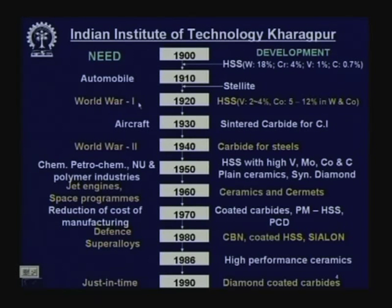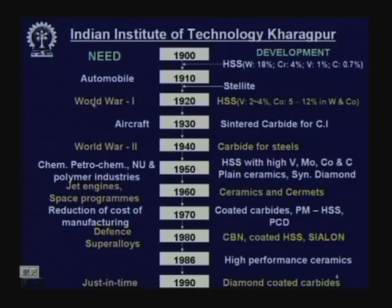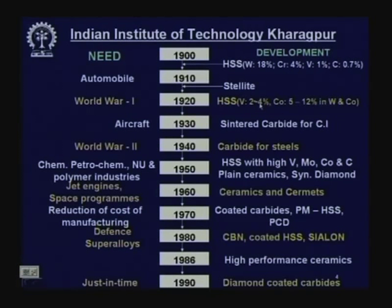The great World War One and World War Two were milestones for the development of science and technology. Around 1920, high speed steel was drastically improved by addition of 2–4% vanadium, which provided more heat resistance and wear resistance.